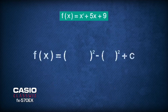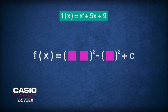To write the function into a completed square form, we use the classic format of a big squared bracket minus a small squared bracket. A positive x is placed on the left side of the big bracket.